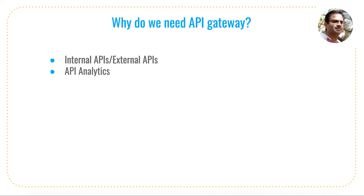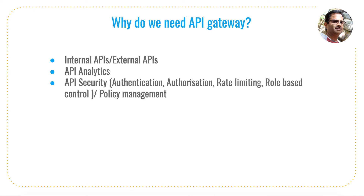The second thing is API analytics. API analytics is very important for any software application or web service. There are multiple reasons you want analytics data — for example, how is the API traffic coming into the system, which APIs are used most frequently, who are the most active developers, which APIs are slower or faster. All this information is logged into the system and the analytics system helps us retrieve it. Another example: geographically, from which location are the APIs being targeted or used the most — that is all analytical information available from the API gateway.